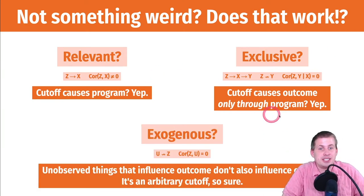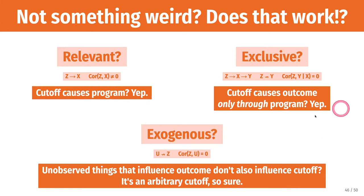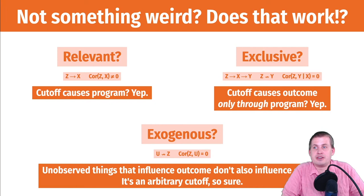Finally, we have exogeneity. This is the idea that nothing else should influence that cutoff node, which again it still works here. Are there unobserved things that influence the outcome that also don't influence the cutoff? Yeah, this was an arbitrary cutoff that was established by some bureaucrat somewhere that said that this is the score that you have to get. That is an arbitrary exogenous cutoff, which means it works as an instrument. So it meets all three of these characteristics.